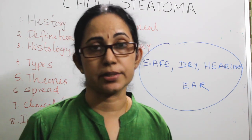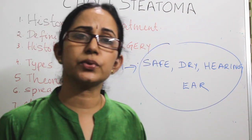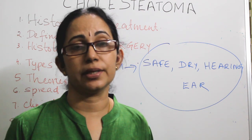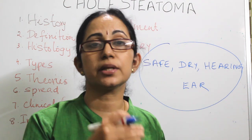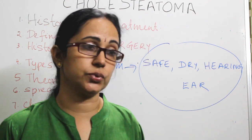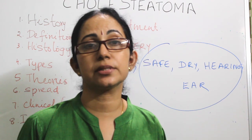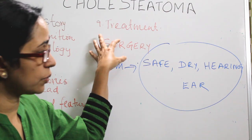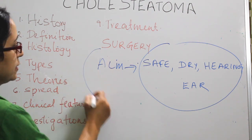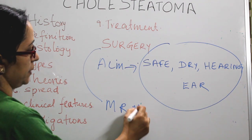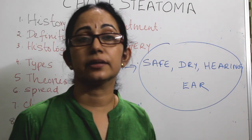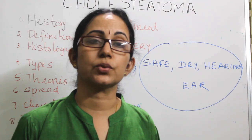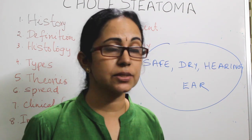Surgical options include canal wall down and canal wall up procedures. In canal wall up, the posterior canal wall is maintained; in canal wall down, the posterior canal wall is drilled out. The most common surgery for cholesteatoma is the modified radical mastoidectomy, which is a canal wall down procedure.